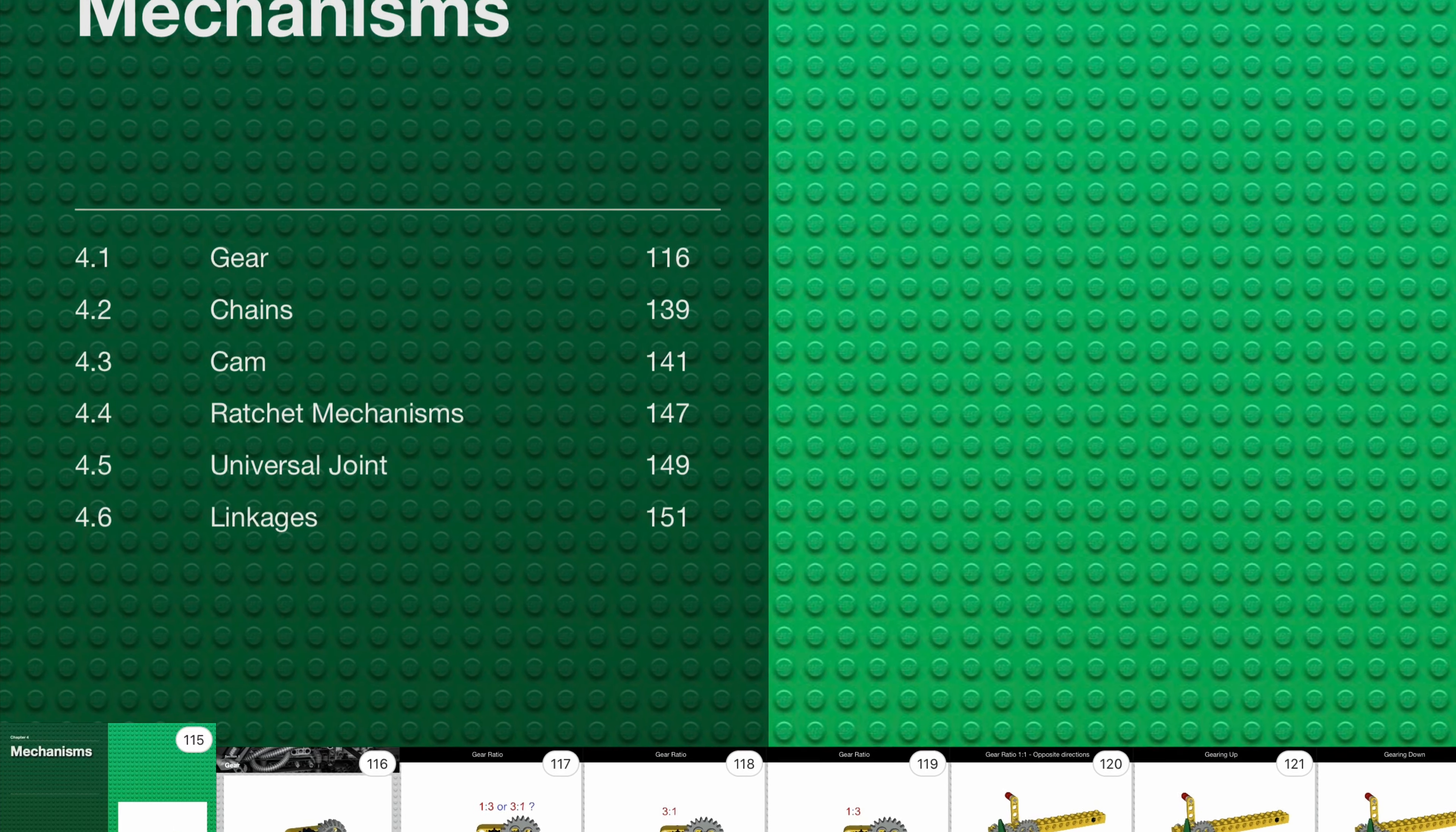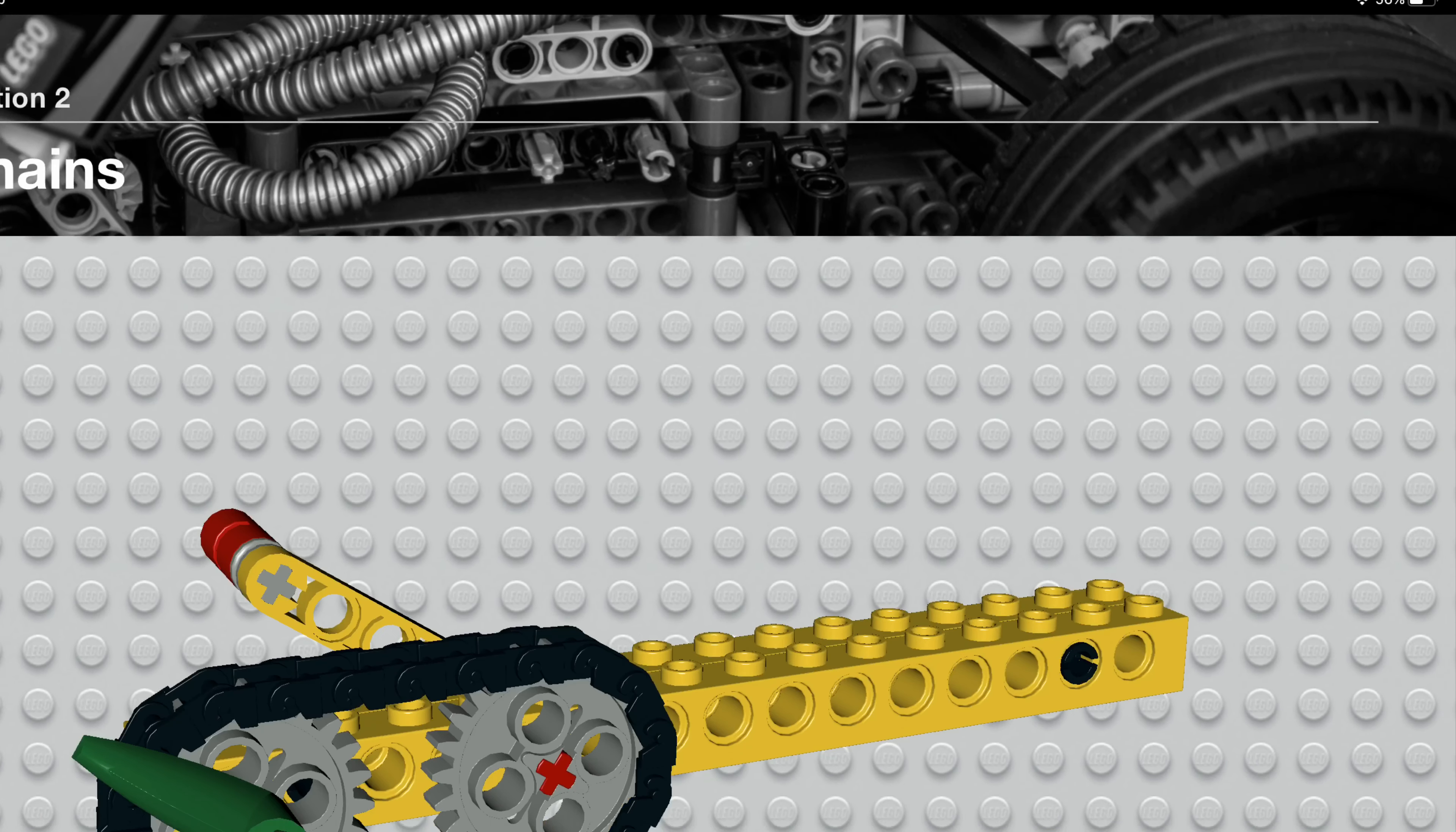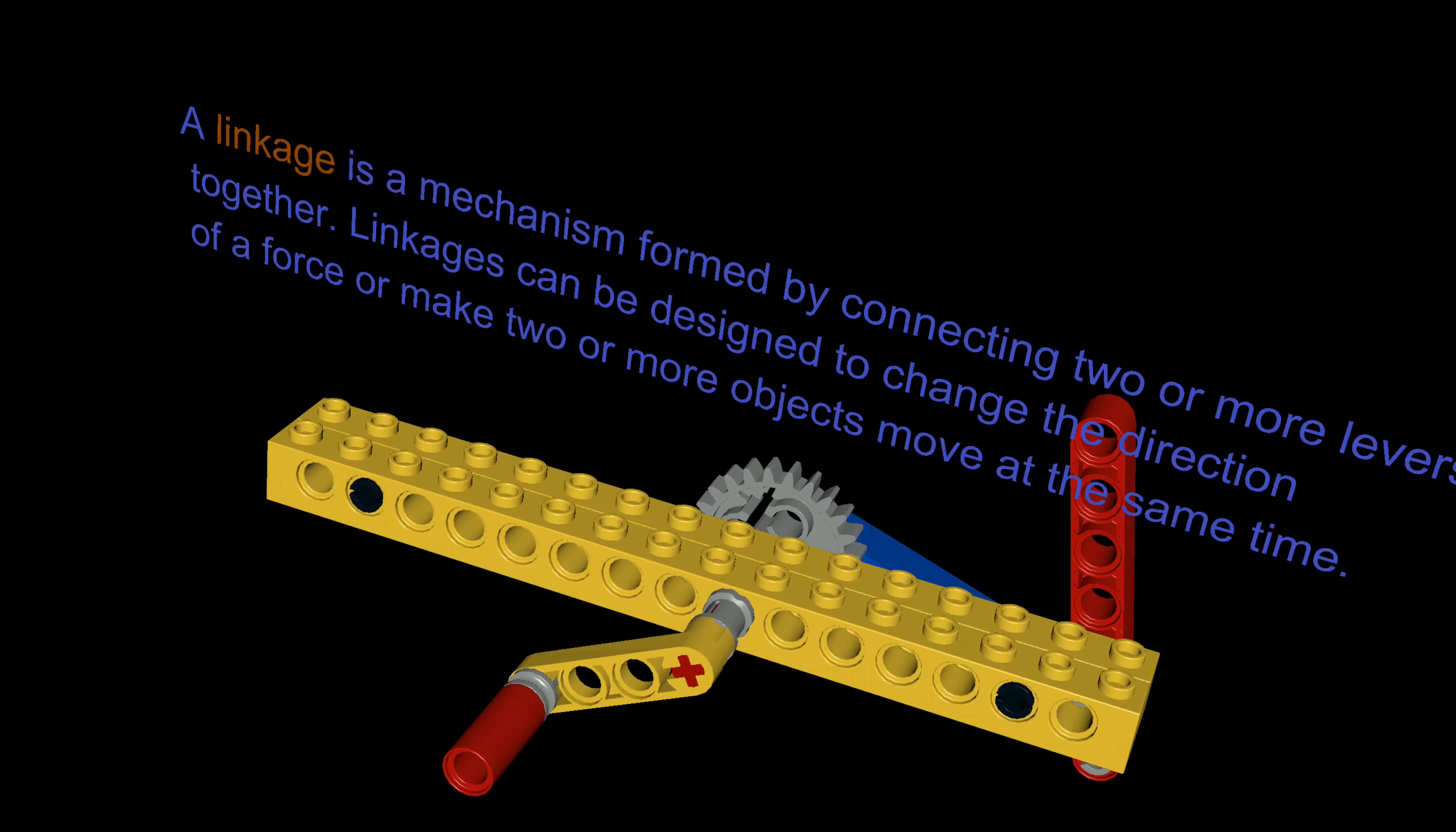And screw. Chapter 4 covers basic mechanisms: gear, chain, cam, pawl and ratchet, junctions, and linkages.